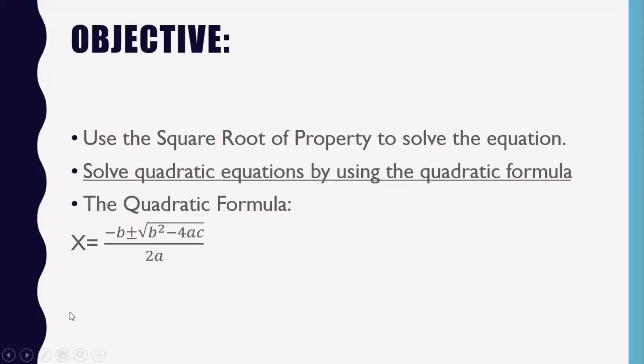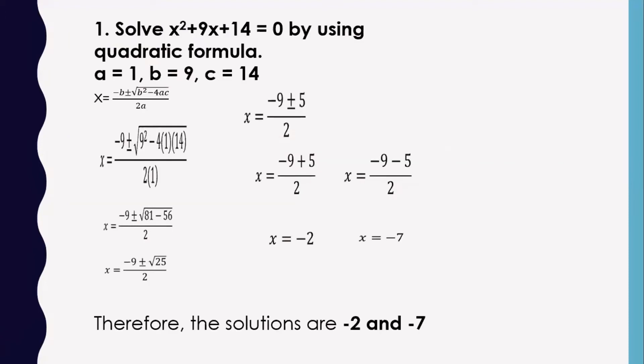Our main objective today is to use the square root property to solve equations, and to solve quadratic equations by using the quadratic formula. Here is our main idea — the quadratic formula: x is equal to negative b plus or minus square root of b squared minus 4ac, all over 2a.